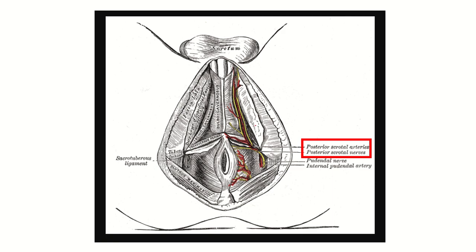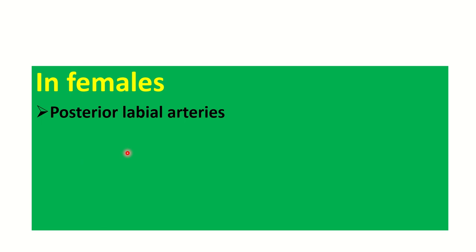Some other blood vessels travel with the penis; these vessels and nerves are also contents of the superficial perineal pouch. The posterior scrotal arteries and posterior scrotal nerves are visible here, arising from the internal pudendal artery and pudendal nerve. This makes the contents of the superficial perineal pouch and its boundary very clear. In the case of female, the posterior labial artery is the main content.